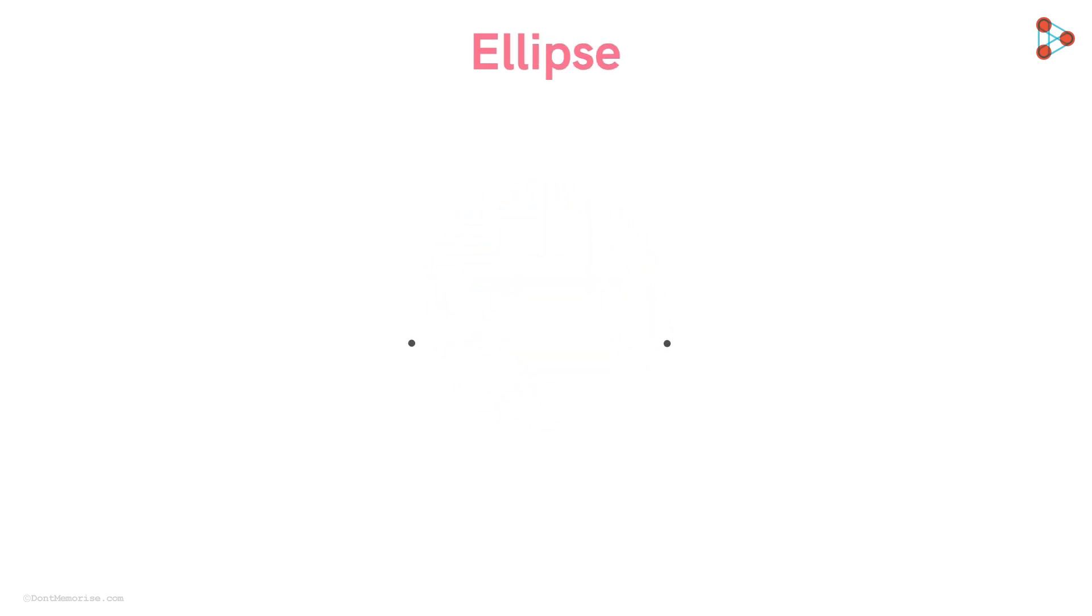How do we understand the shape of an ellipse? Suppose we have two points in a plane. We name this point as F1 and this point as F2.